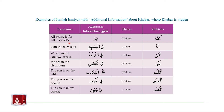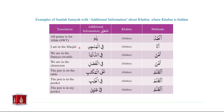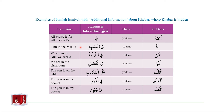Ana fil masjidi — I am in the masjid. Ana is muptada, the khabar is hidden, and fil masjidi is murakkab-e-jaari being used as mutallik or additional information. The khabar can be hidden because it doesn't matter whether I am sitting, walking, or standing in the masjid. Ana fil masjidi by itself is sufficient to convey 'I am in the masjid.' Therefore, we do not always need to mention the khabar in such examples.